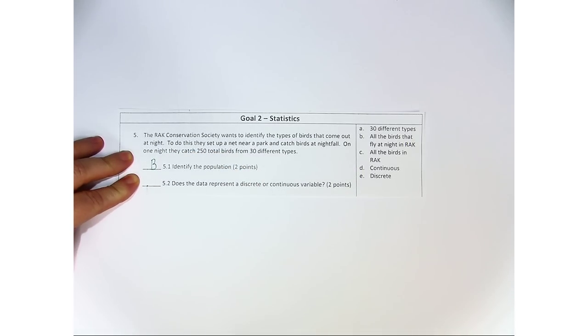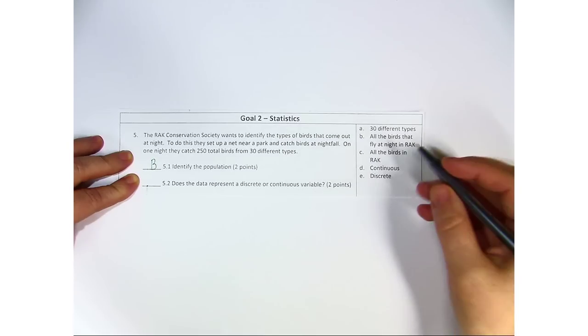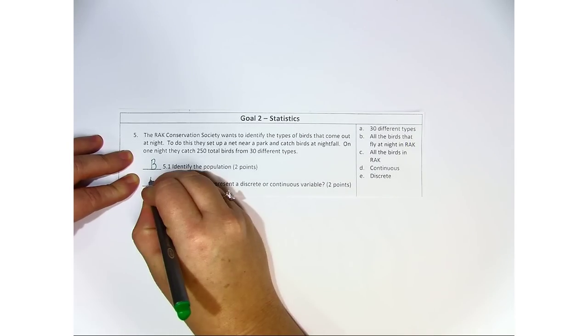Then it says, does the data represent a discrete or a continuous variable? In this case, because it is a living thing, you cannot break the living thing into smaller portions. So this would be a discrete variable.